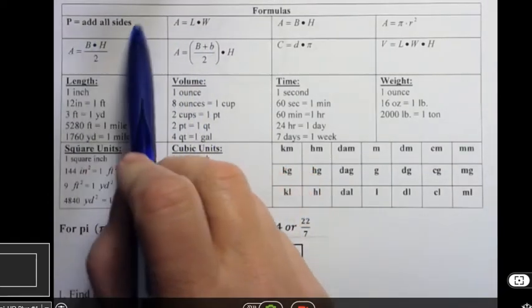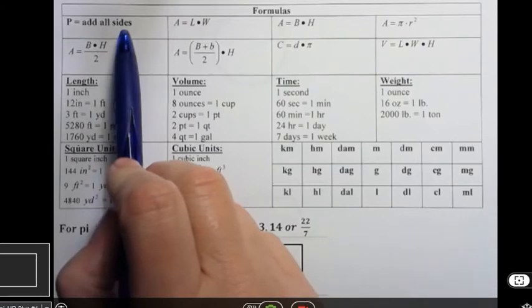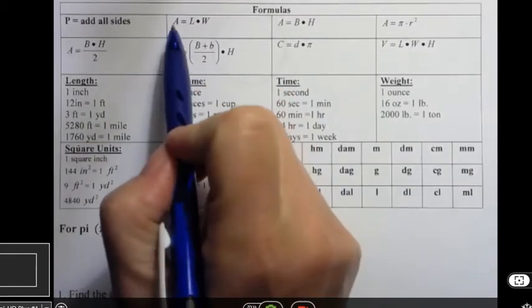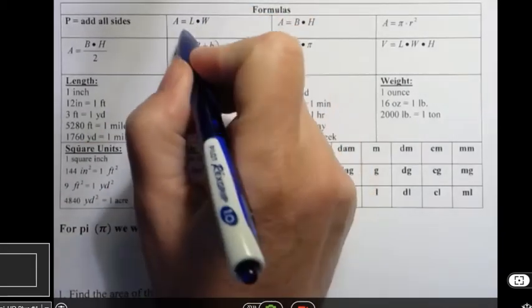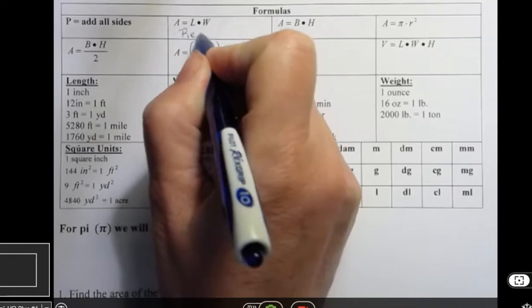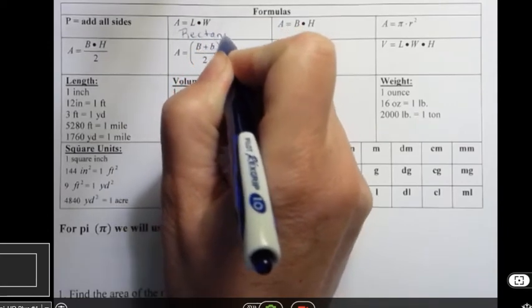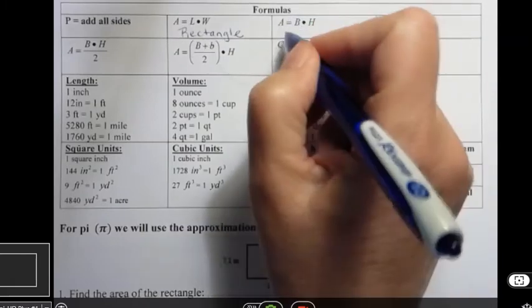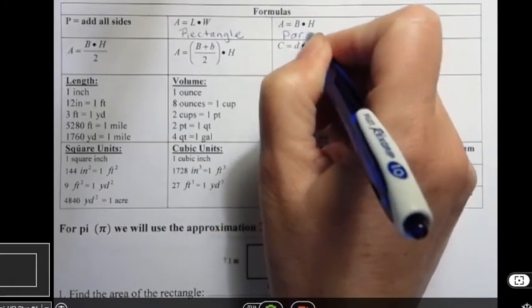If you want to find the perimeter of a polygon, you just add all the sides. There's different formulas for that, but that's the simplest way to think about it. Area equals length times width is if you have a rectangle.